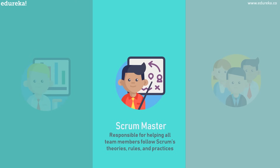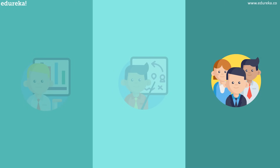The Scrum Master is the team's resident facilitator, responsible for helping all team members follow Scrum's theories, rules, and practices. They make sure the Scrum team has what it needs to complete their work — removing roadblocks, organizing meetings, and dealing with bottlenecks. The Development Team is the group of people working together to deliver the product. Development teams are given the freedom to organize themselves and manage their own work to maximize efficiency and effectiveness.